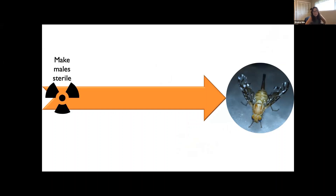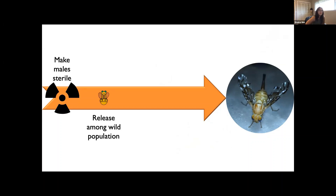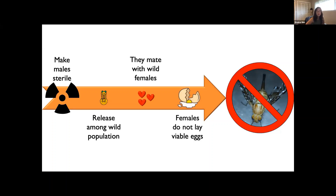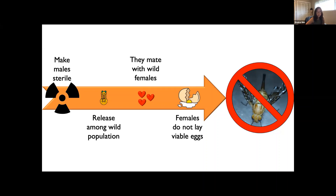The sterile insect technique is a technique in which an SIT program creates sterile male flies, usually through irradiation, and those flies are released amongst a wild population. If a love connection is made, this will result in females that do not produce offspring and an eradicated or suppressed wild population.